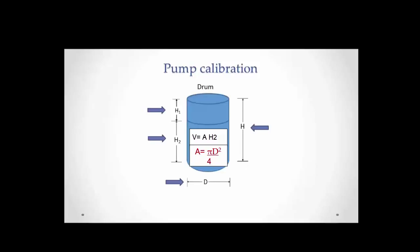The area of the circle is πD² divided by 4, which is multiplied by H₂ to obtain the volume of grout pumped to the drum.